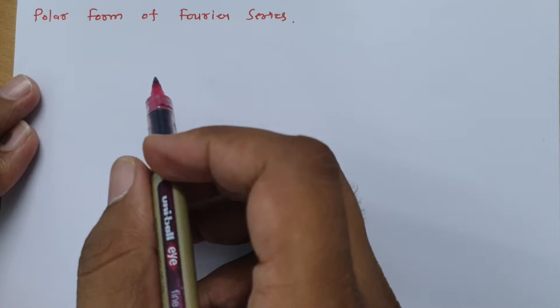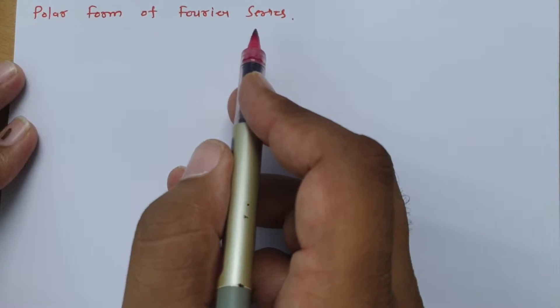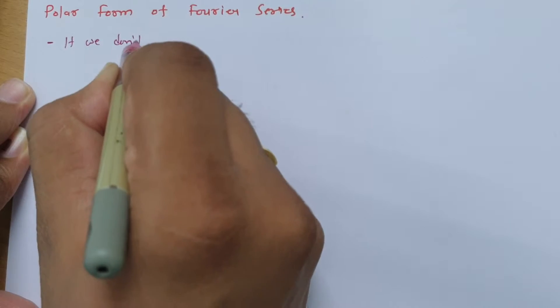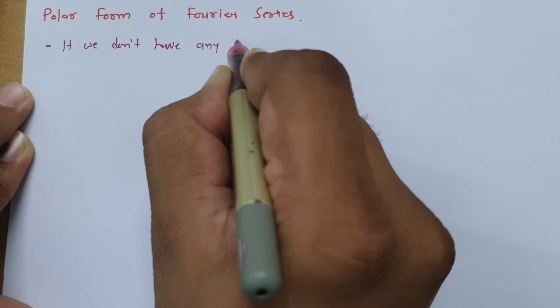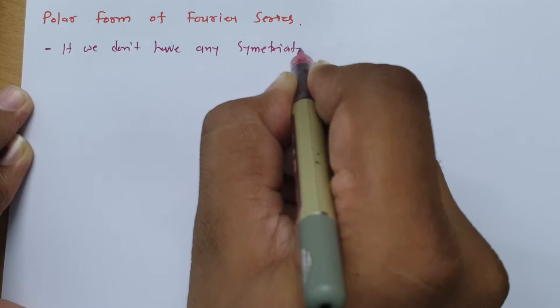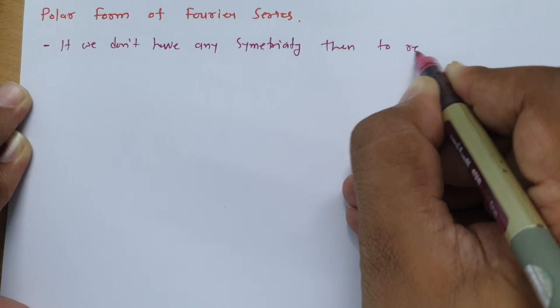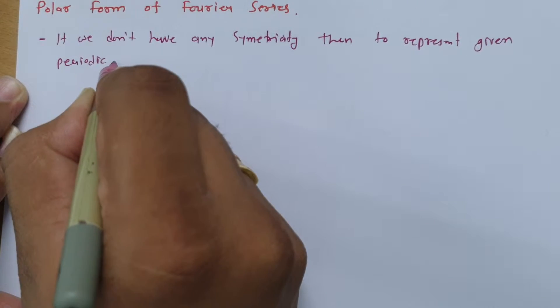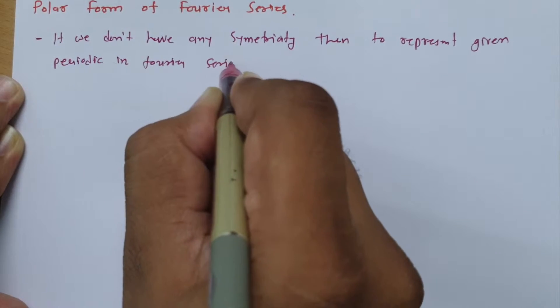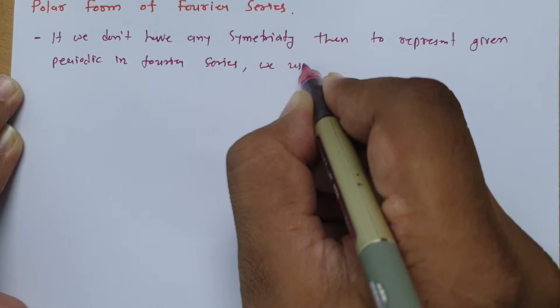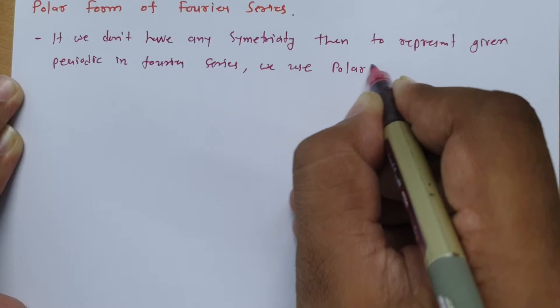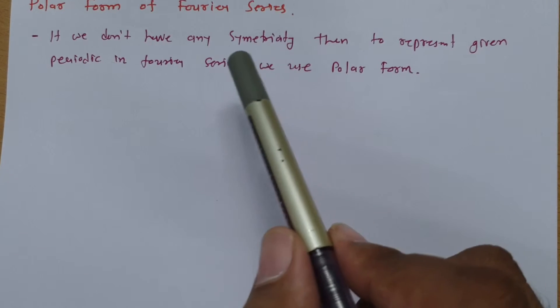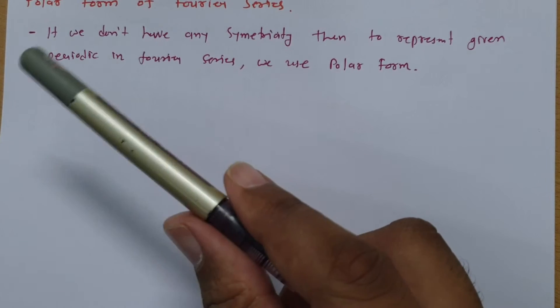But when we don't have any symmetricity in that case Fourier series for periodic signal we can have polar form. So if we don't have any symmetricity then to represent given periodic signal in Fourier series, we use polar form. So this is what we need to keep in our mind if we don't have any symmetricity. In that case we represent given periodic signal in Fourier series by using polar form.